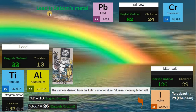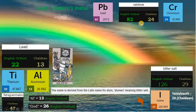Colors are represented in the rainbow. It's interesting to see that rainbow is 24 in Chaldean, matching element chromium, which means color. Rainbow is 82 in English ordinal, matching element lead, and lead is Saturn's metal.